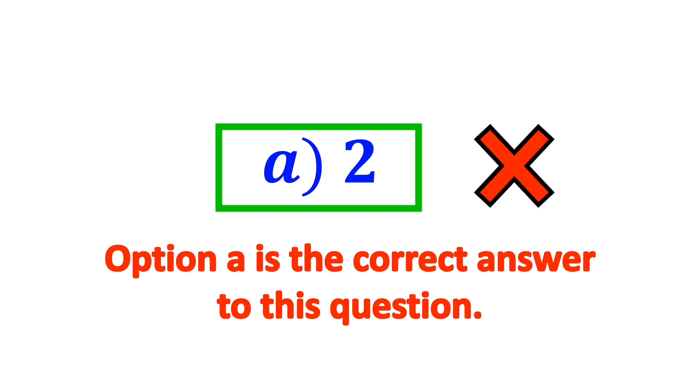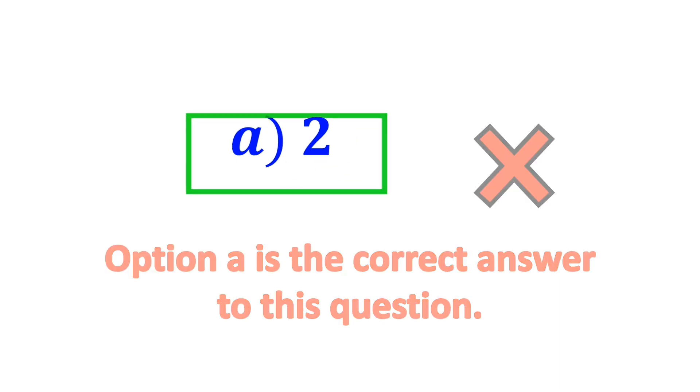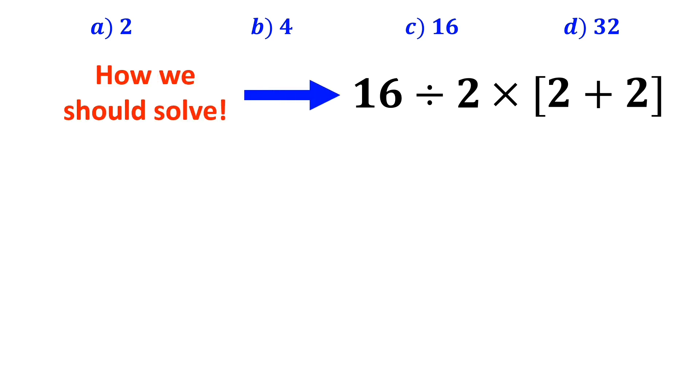But that's definitely wrong. Now, let me explain step by step how we should solve this question. As you can see on the screen, in this expression we have a division sign, followed by a multiplication, and then a bracket.